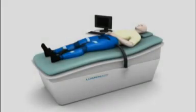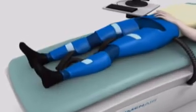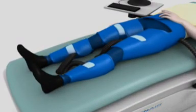During EECP therapy, the patient lies on a treatment table with large blood pressure-like cuffs wrapped around the patient's calves, thighs, and buttocks.